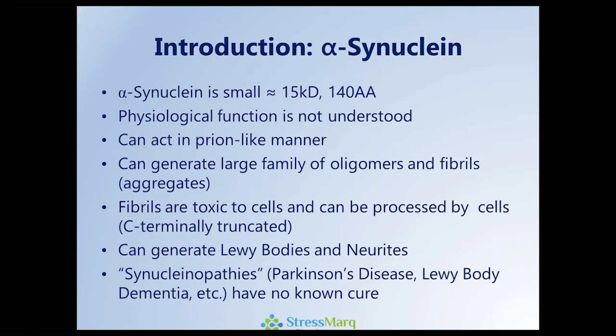Alpha-synuclein is a relatively small 15 kilodalton protein whose physiological function is not well understood. It can act as a prion-like protein and can generate large families of oligomers and fibrils. These are toxic to cells and can be processed by them by virtue of C-terminal truncation. They can also go on to generate Lewy bodies and neurites. Synucleinopathies is a term given to alpha-synuclein-related diseases that have no known cure.